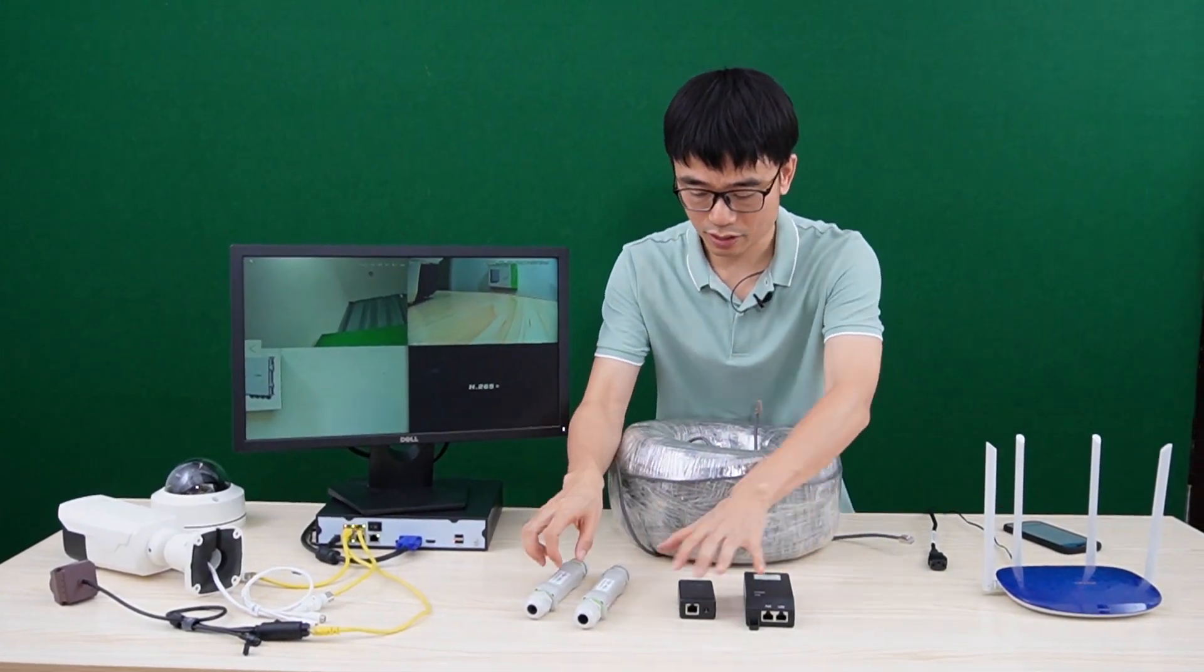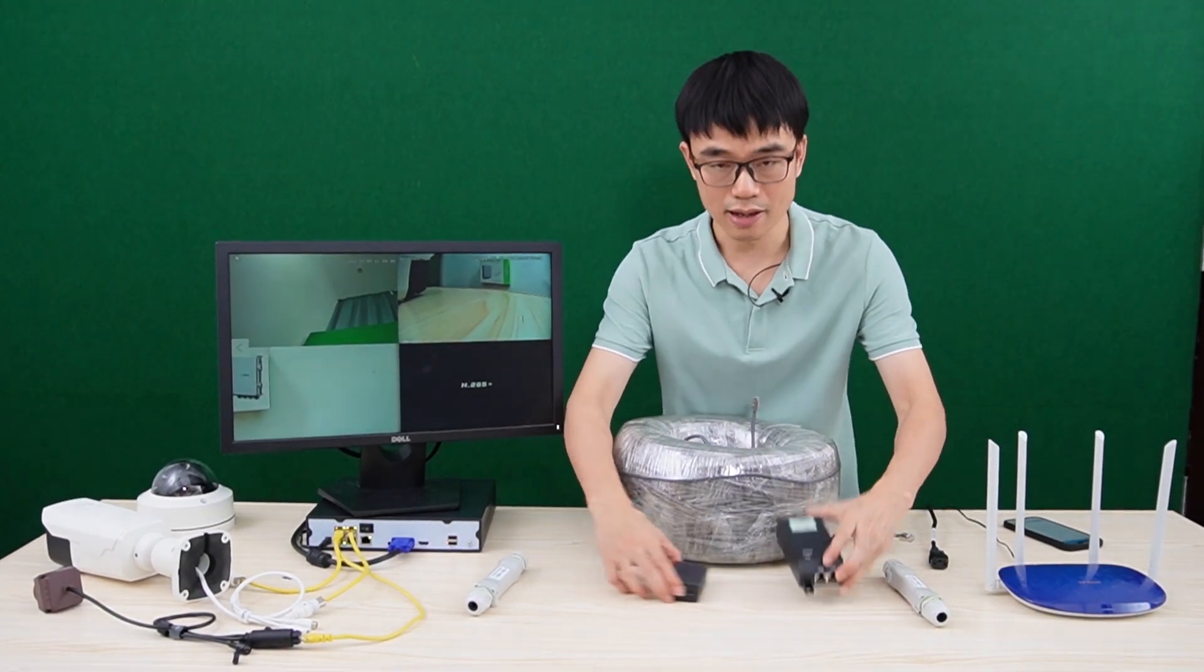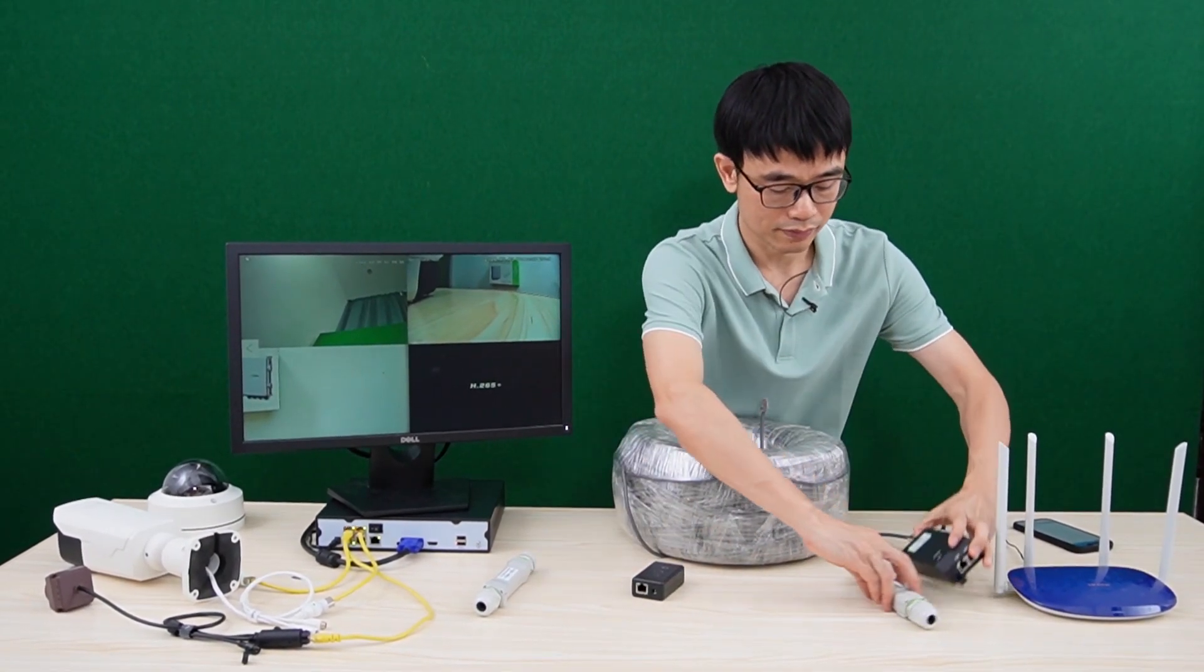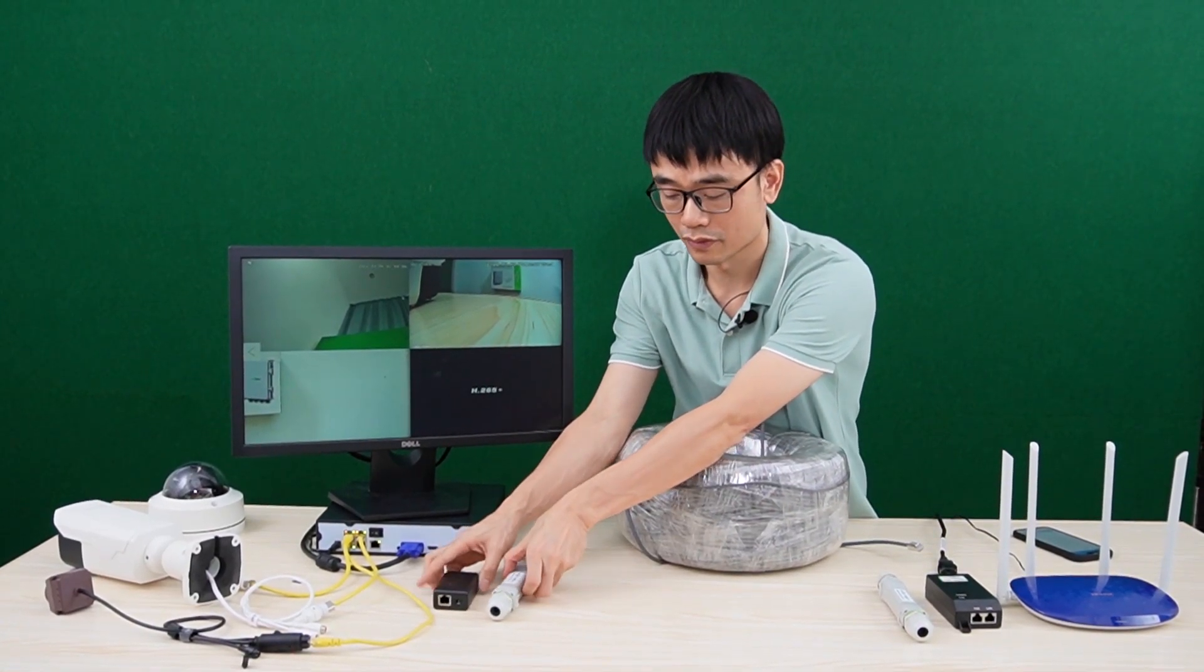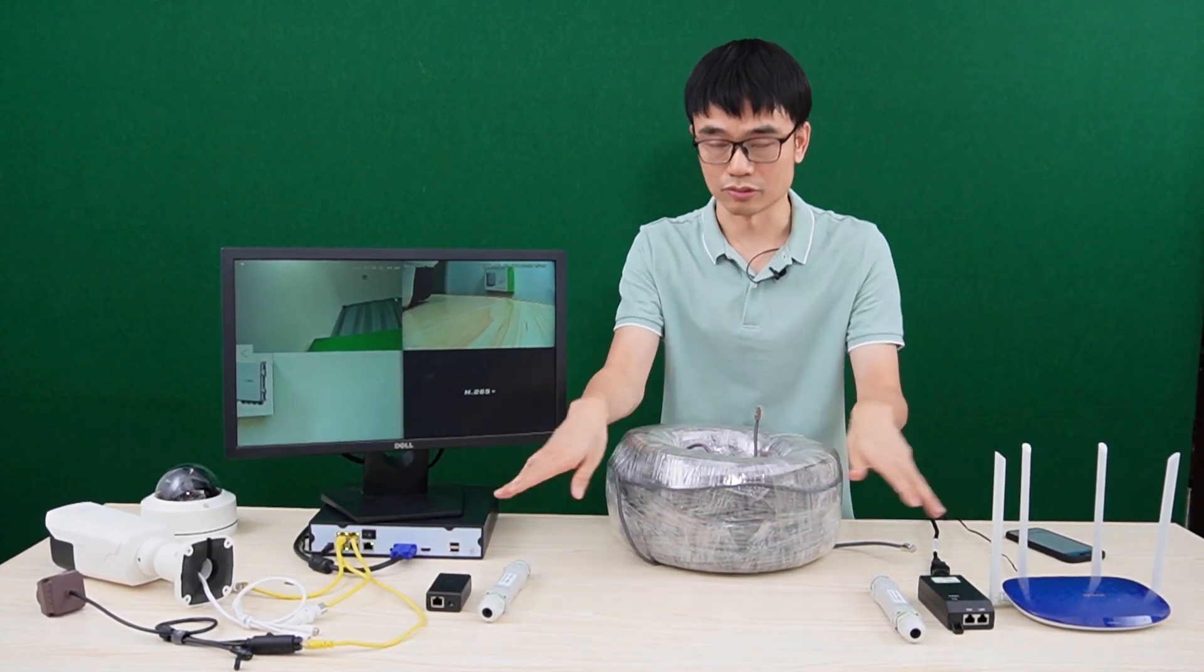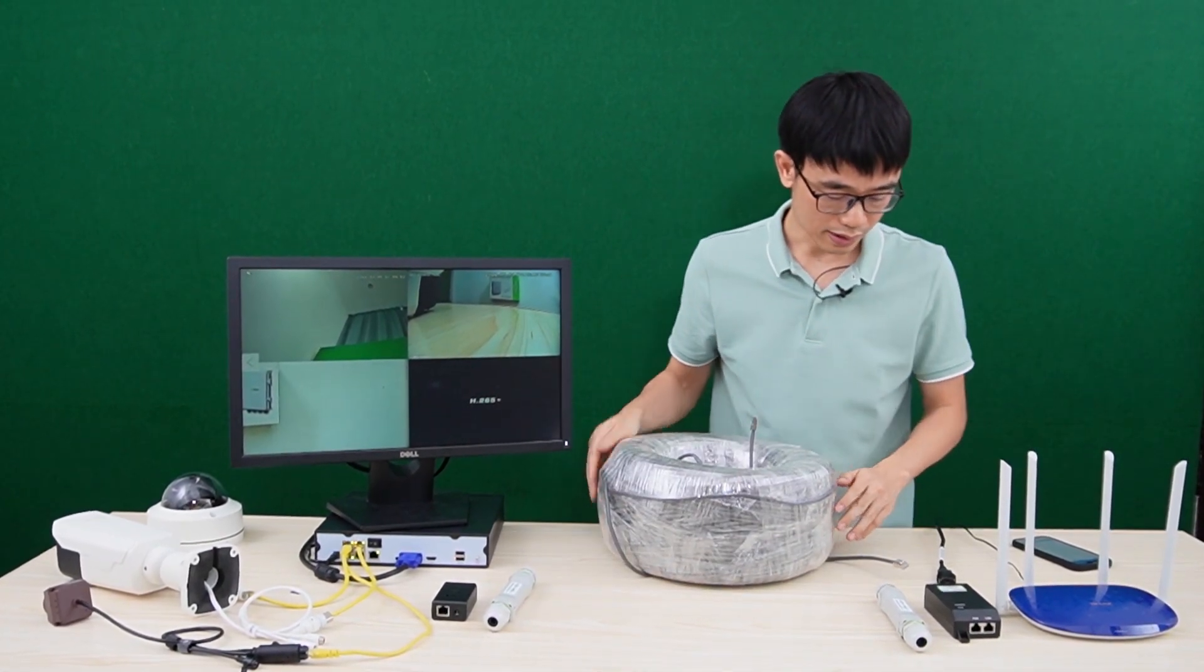Basically, we need PoE extenders on both sides, one for each. And we need to place this PoE injector just before the PoE extender, also the splitter after the PoE extender. And then we connect the cable to this, this is 1000 feet Ethernet cable. And let's get started.